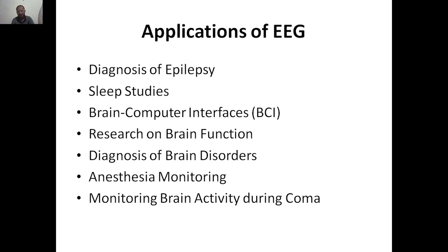Next is diagnosis of brain disorders such as Parkinson's disease and Alzheimer's disease. When Alzheimer's disease occurs, the brain impulse pattern will be different. When a person has Parkinson's disease, brain impulses and the brain pattern will be different — the EEG pattern will be different. Based on that, we can understand and diagnose brain disorders.